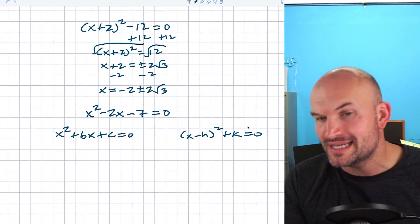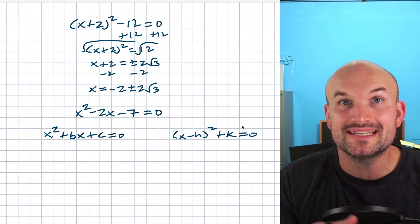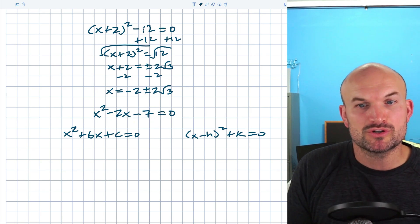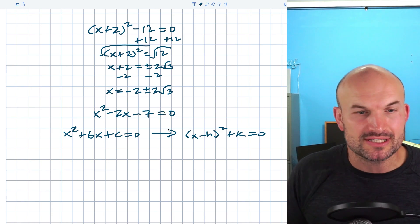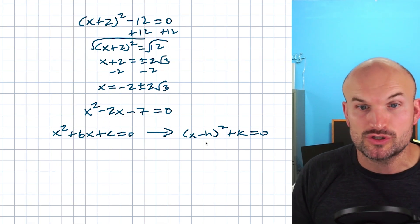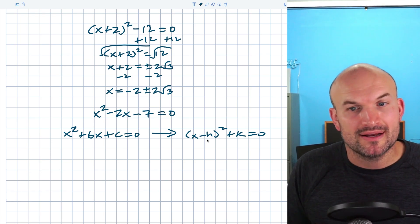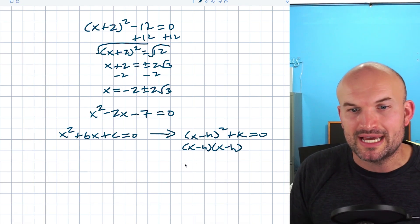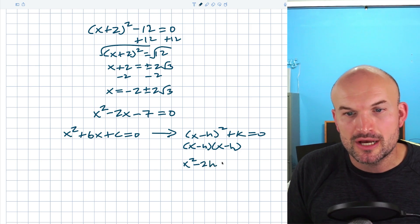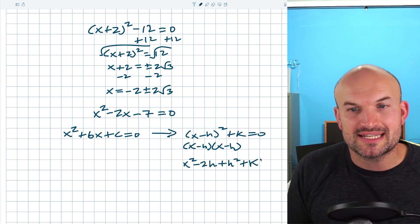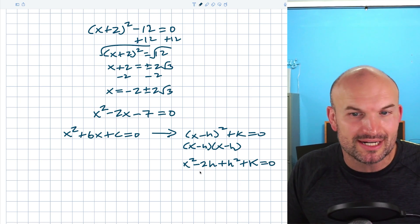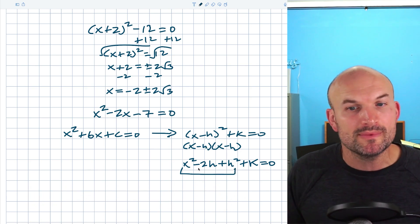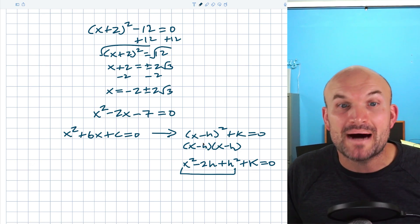Don't worry about the positives, negatives, h, k, b, or c — what matters is the equation we're struggling with is in standard form, while the easier equation is in vertex form as a binomial squared. That's what gives us the singular x being squared. If we expand (x minus h) squared, we get x squared minus 2hx plus h squared. This is what we call a perfect square trinomial, and all perfect square trinomials can be factored down to a binomial squared.